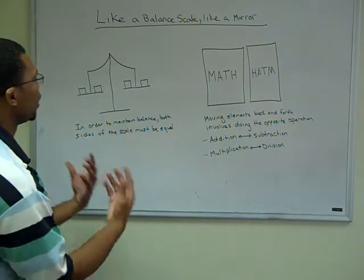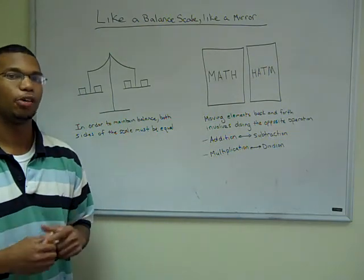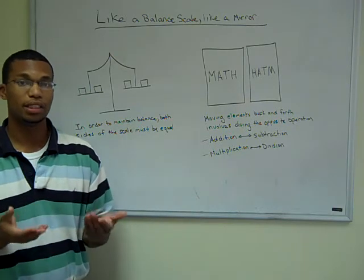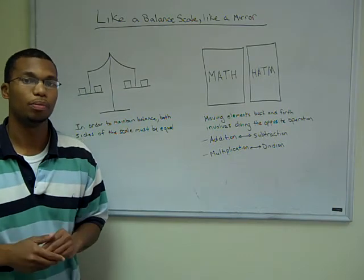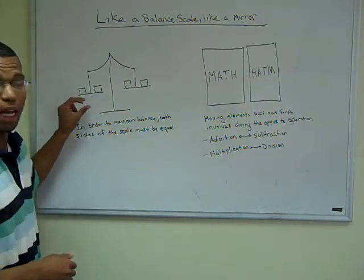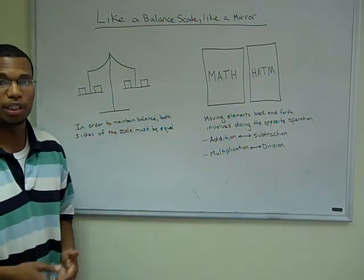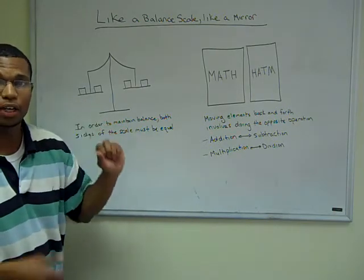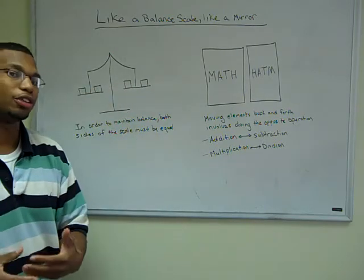The first scenario: an equation is like a balance scale. In order for a balance scale to maintain balance, both sides have to be equal. In the picture I've drawn, I have two blocks on this side and two blocks on the other side, which is balanced because they have the same weight. But if I remove one block from one side, in order to remain balanced, I'm going to have to remove a block from the other side.